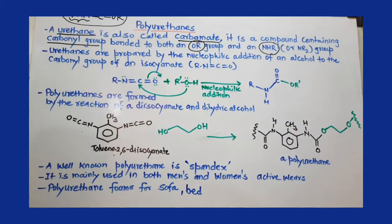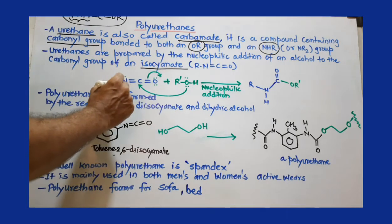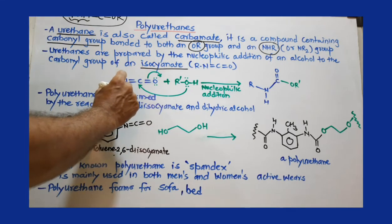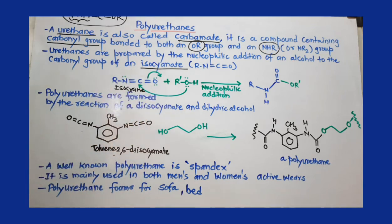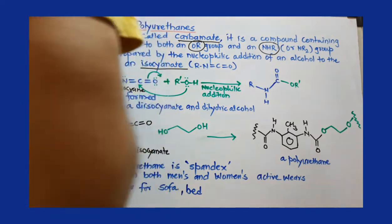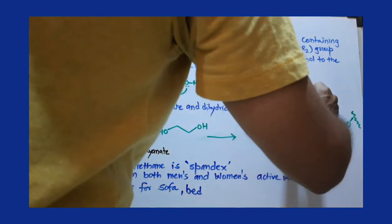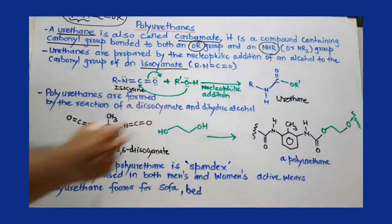Urethanes are prepared from isocyanates. What is an isocyanate? This is isocyanate: R-N=C=O. We need isocyanate. From the isocyanate we can have urethane. Urethane is prepared from isocyanate after a nucleophilic addition reaction.